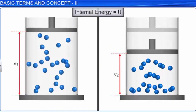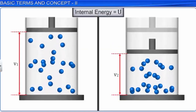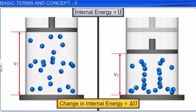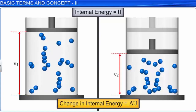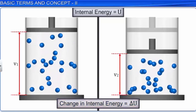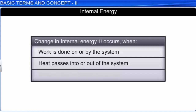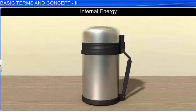The absolute value of internal energy cannot be found. However, the change in it, represented by delta U, can be found. Internal energy changes when work is done on or by the system, when heat passes into or out of the system, or when matter enters or leaves the system. Let us discuss the change in internal energy brought about by work done on the system.